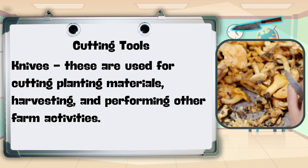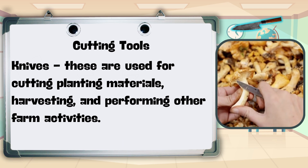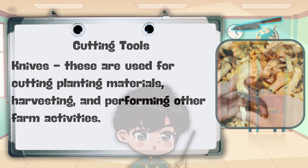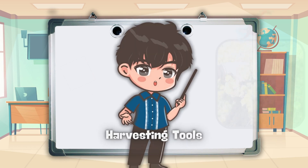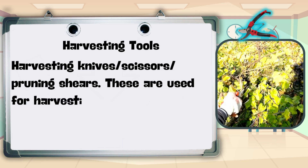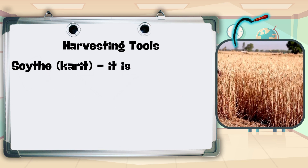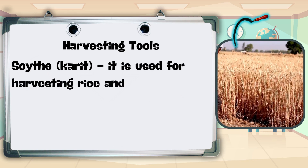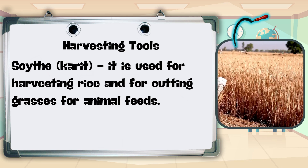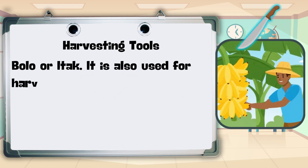For harvesting tools: harvesting knives, scissors, or pruning shears — used for harvesting vegetable crops; scythe or carrot — used for harvesting rice and for cutting grasses for animal feeds; bula or itac — also used for harvesting crops.